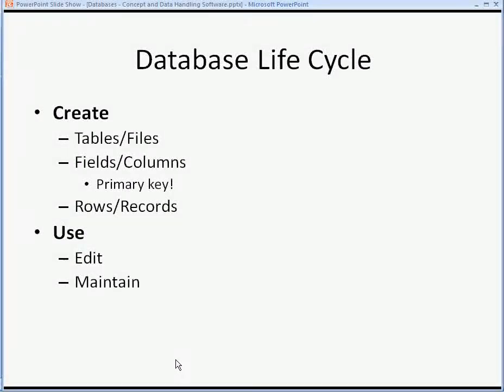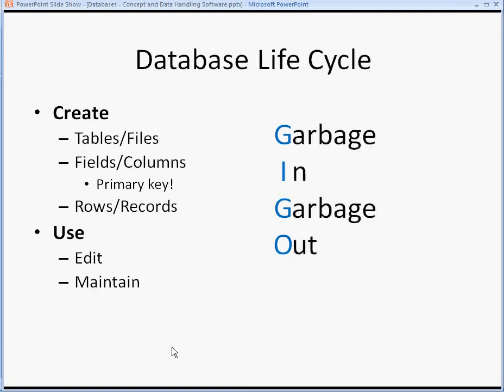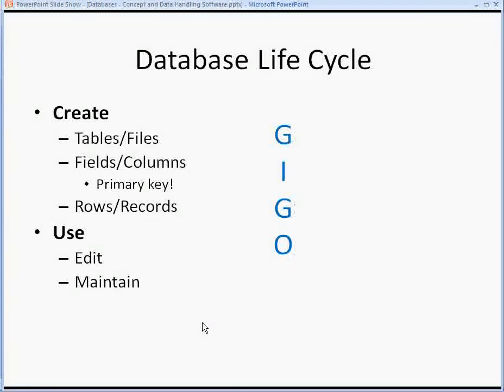Data in a database needs to be maintained — kept up to date — and whatever we put in must be accurate. There's a term called GIGO, an acronym for garbage in, garbage out. If we put garbage into our database, when we run reports or search within the database, we get garbage out. So remember that term: GIGO — garbage in, garbage out.